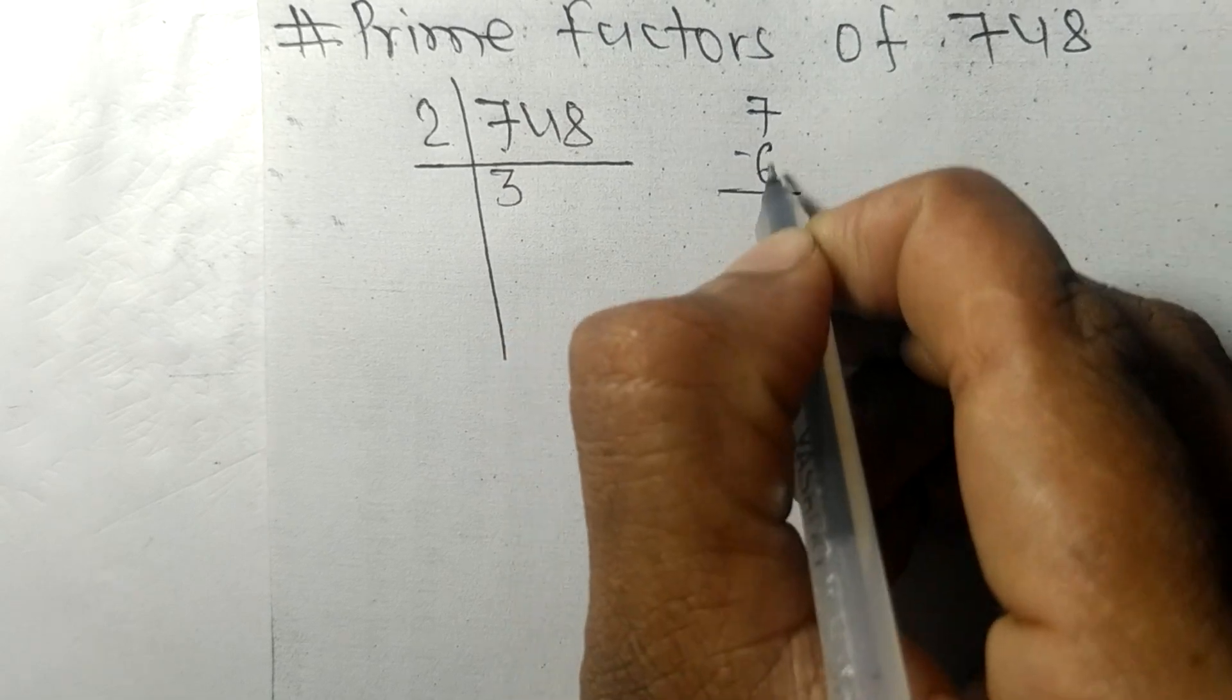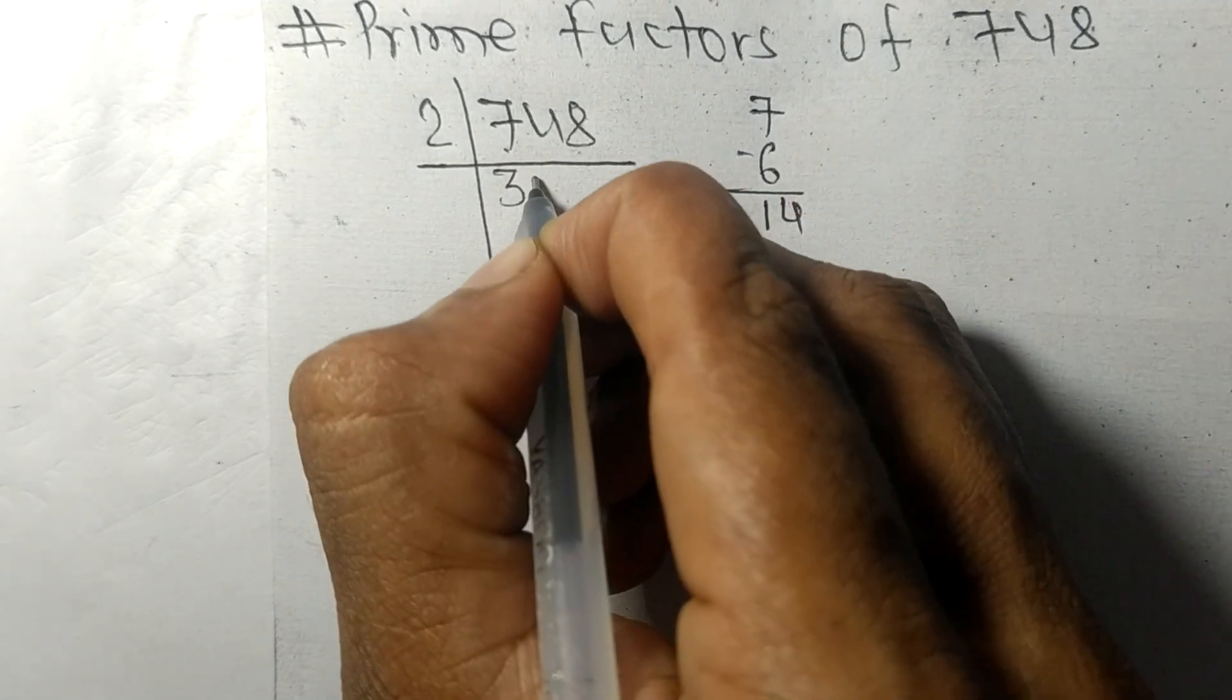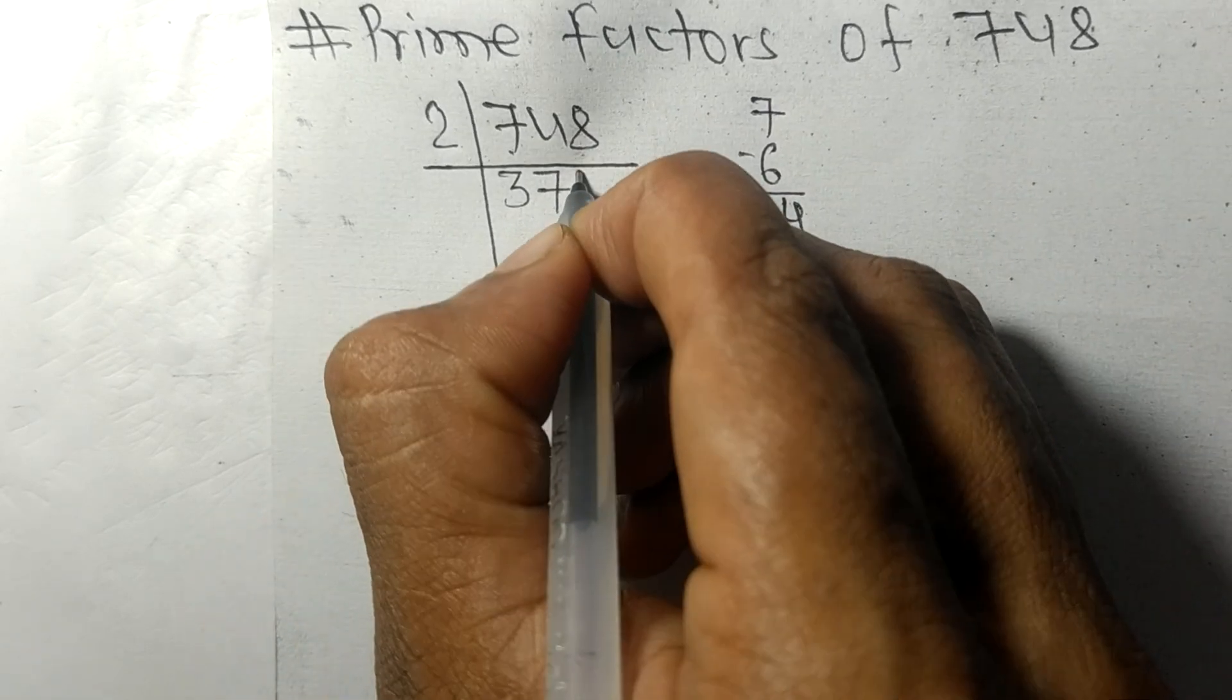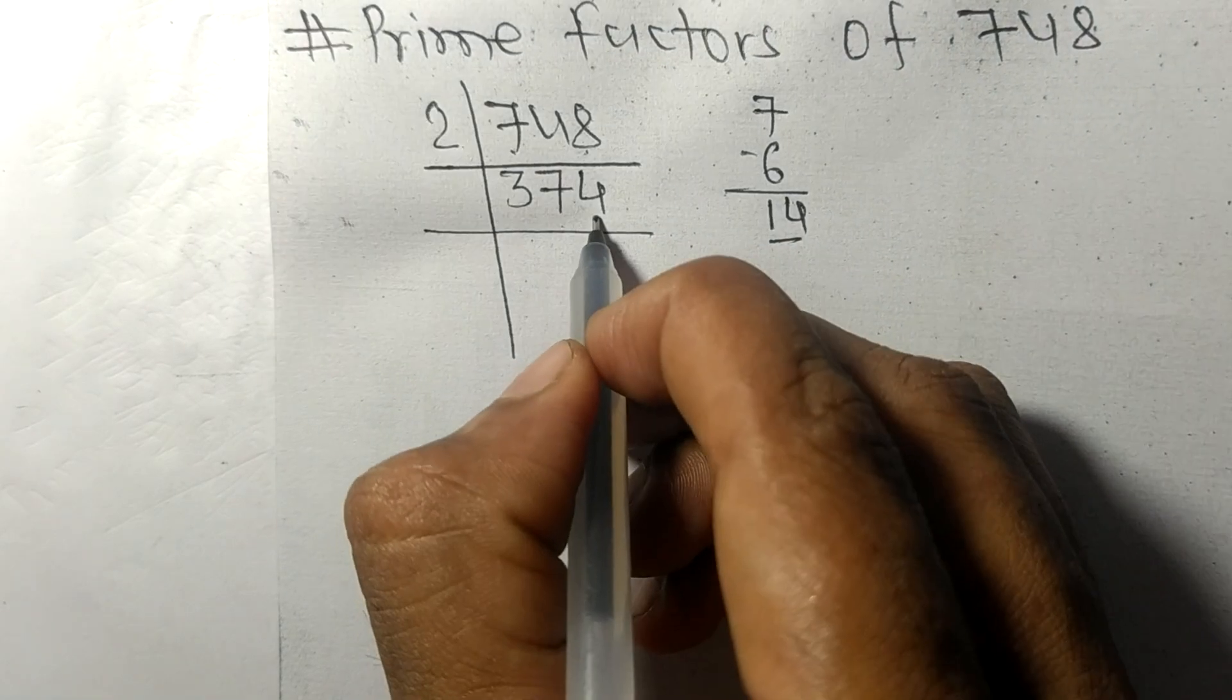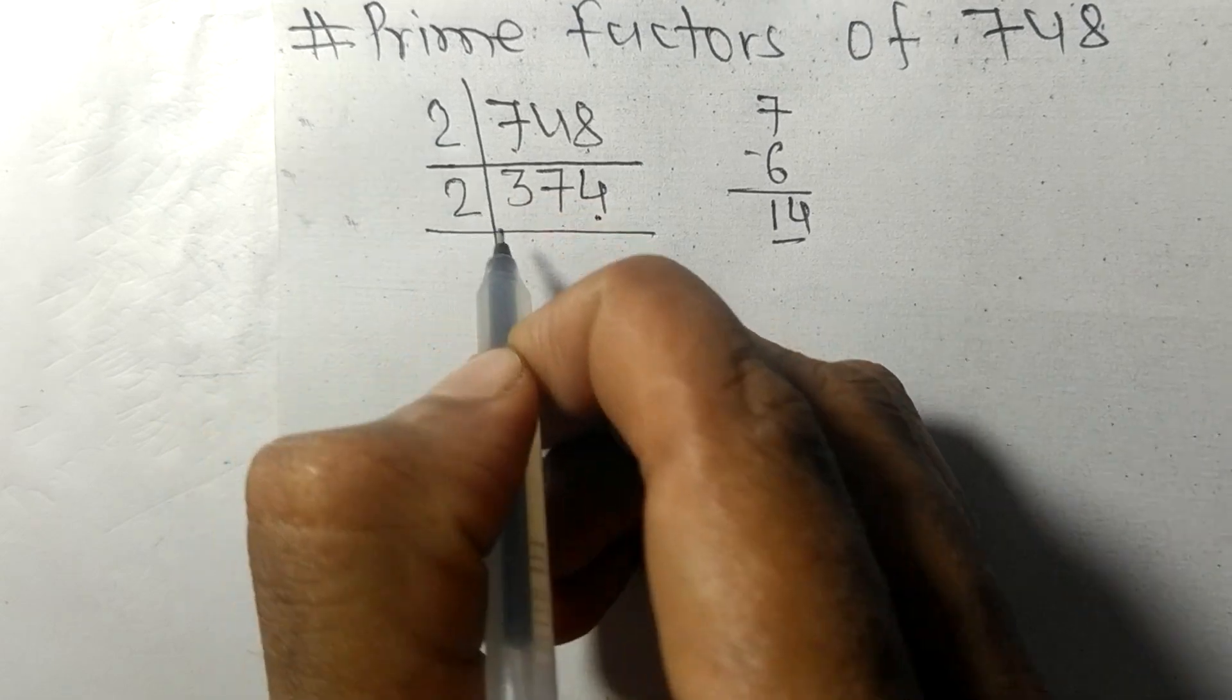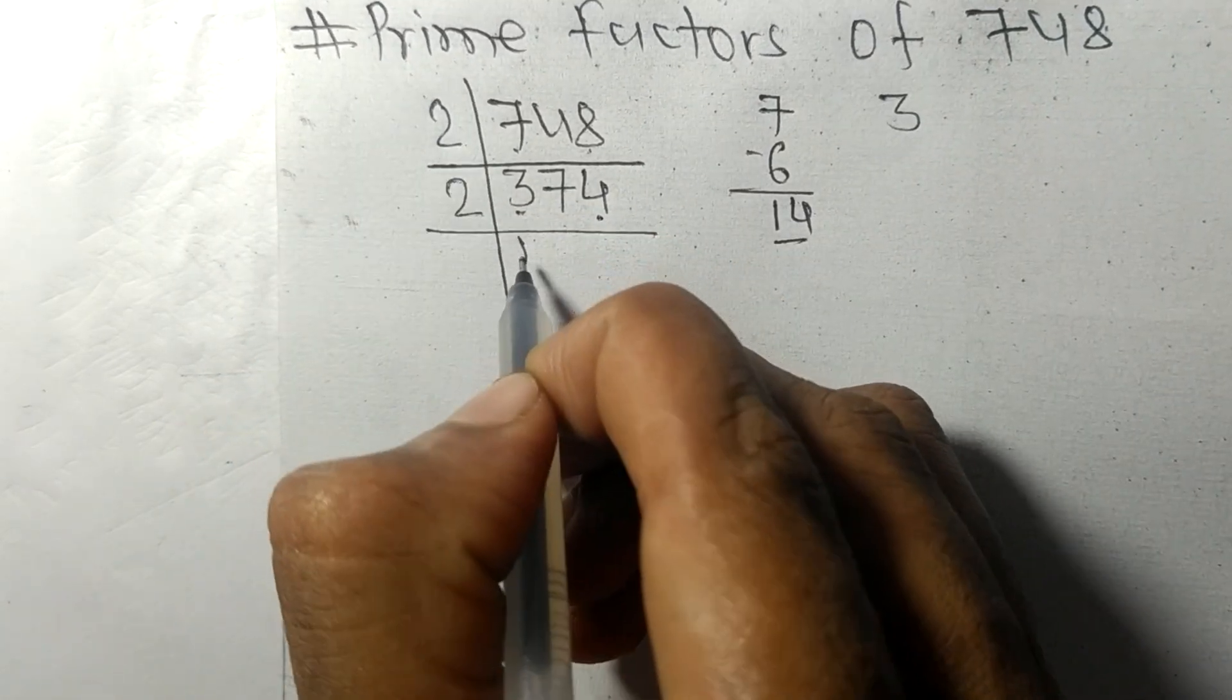...equals 6 remainder 1, and 14: 2 times 7 equals 14, and 2 times 4 equals 8. Again it has even number 4 at last, so it is divisible by 2. First we have 3, so 2 times...